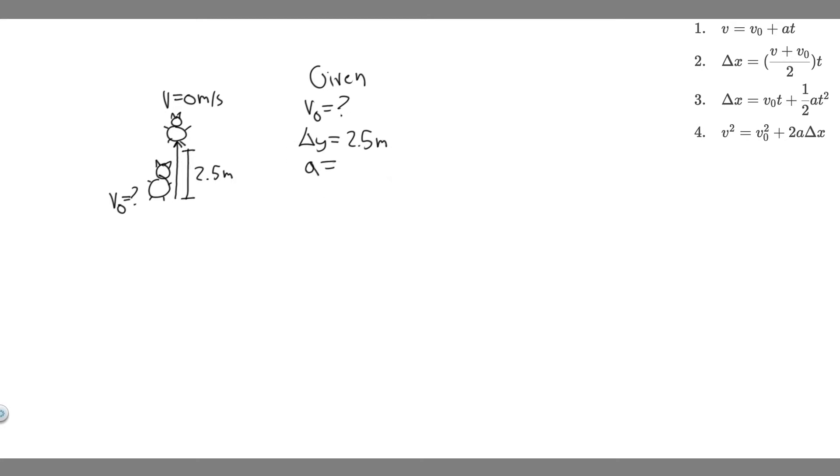We know its acceleration is going to be minus 9.8 meters per second squared. Acceleration due to gravity. Gravity pulls things down, so it's negative because the acceleration is downwards. And then we know its final velocity is going to be 0 meters per second, because at the end of this interval where it jumps 2.5 meters, its velocity is 0.